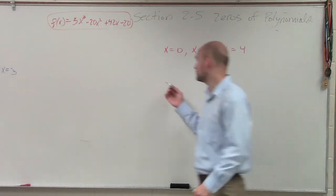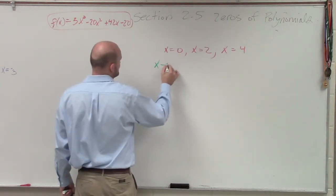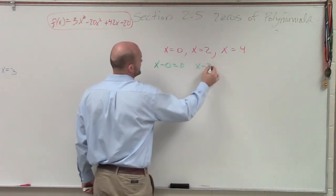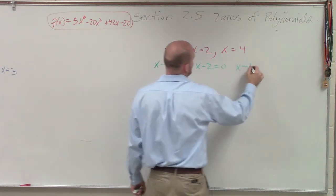So what I like to do is just kind of work them backwards and say x minus 0 equals 0, x minus 2 equals 0, and x minus 4 equals 0.